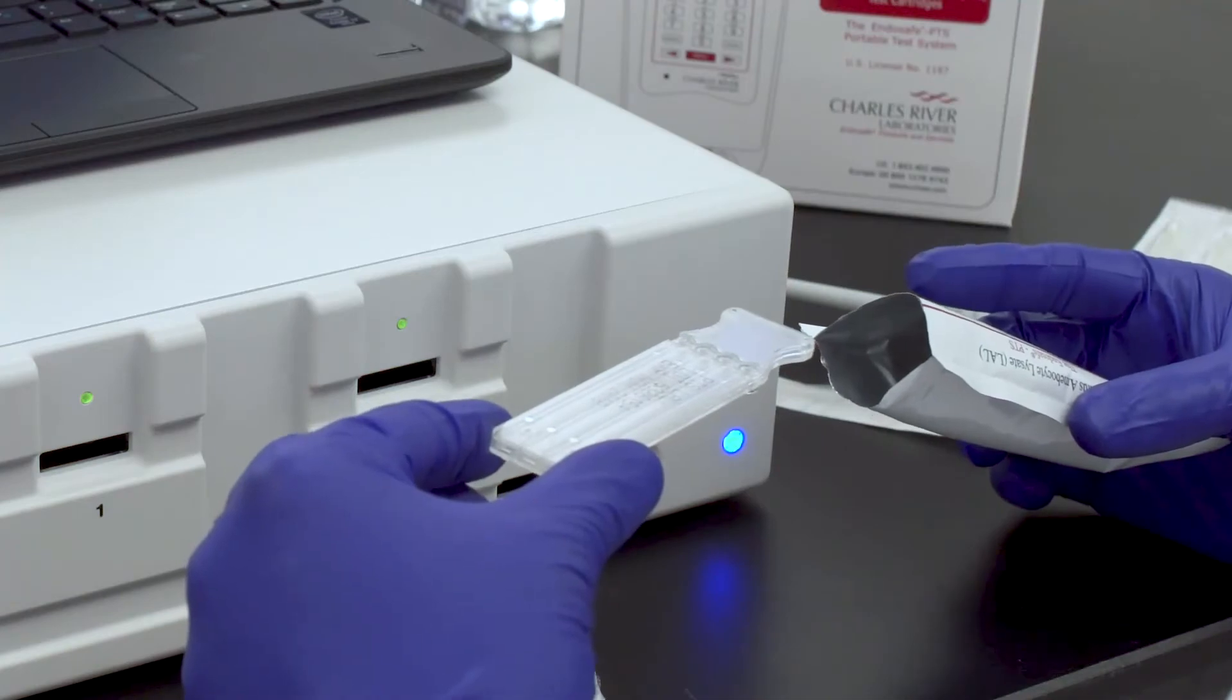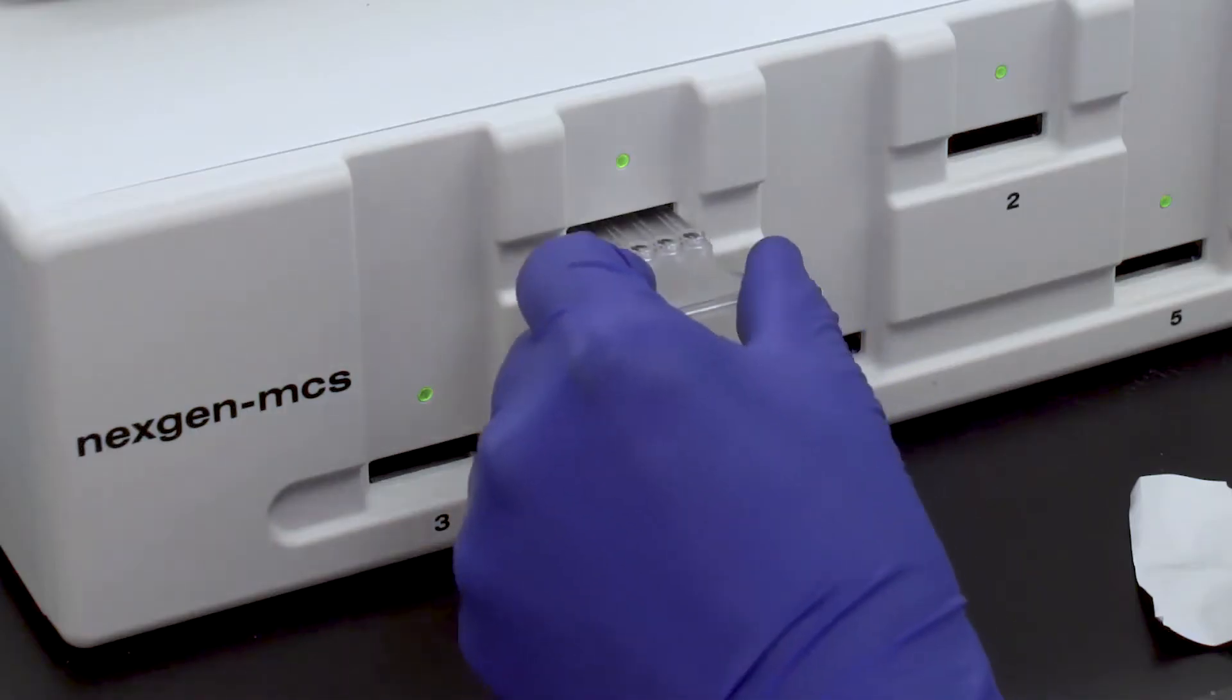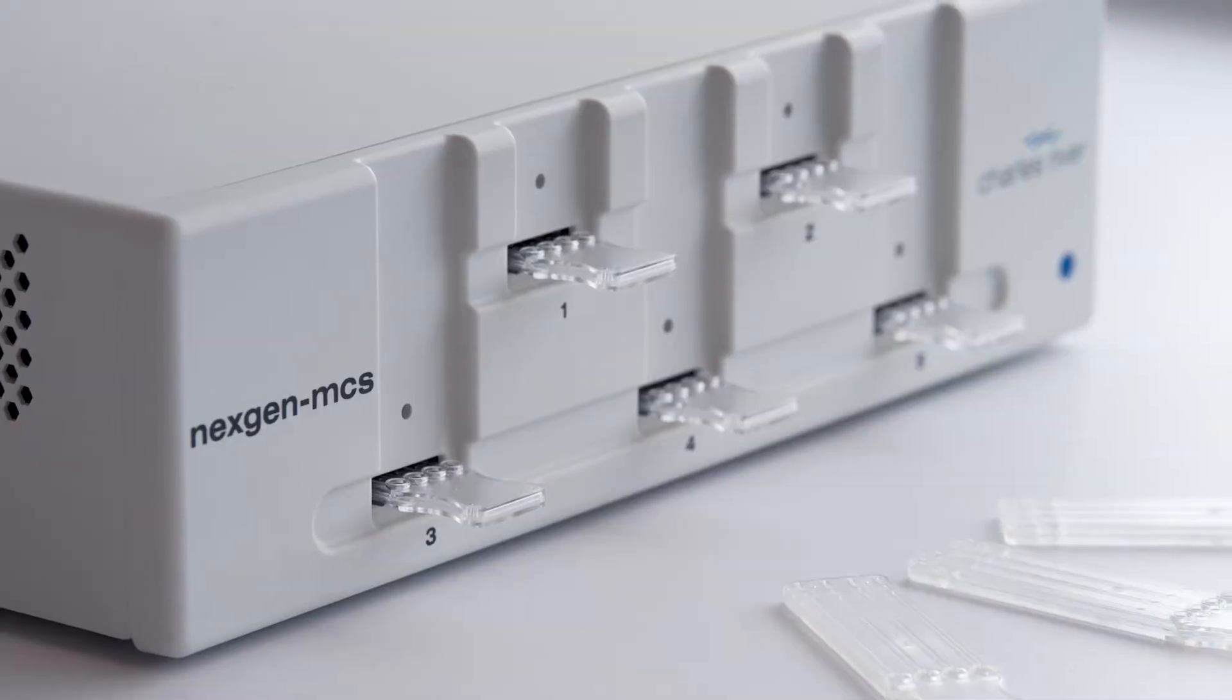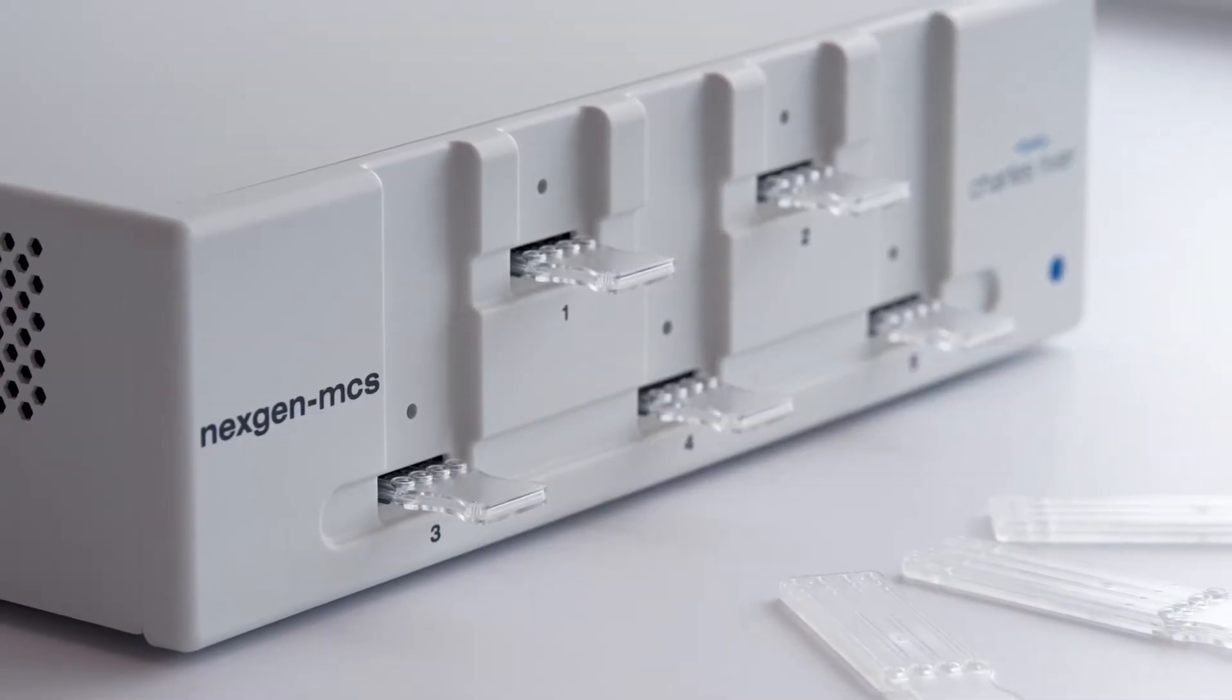Once the cartridge is fully removed, touch only the handle end of the cartridge as you begin to place it in the first bay of the reader with the wells facing up. The reader has an engagement mechanism to ensure the cartridge is securely inserted into the system.